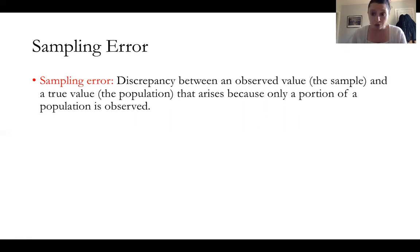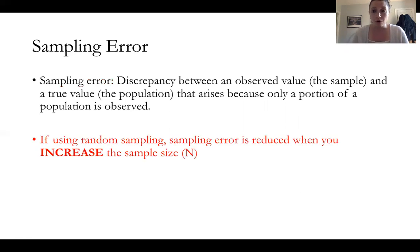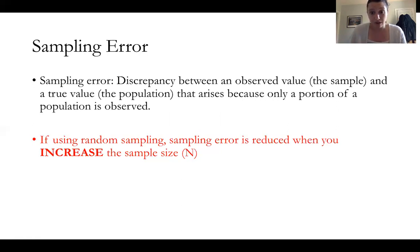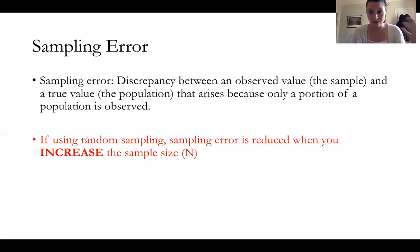So how do we reduce sampling error? If you are doing random sampling — those probability samples from video one — you can reduce sampling error by increasing your sample size, which should make sense intuitively. As your sample keeps growing, it approaches the entire population, representing more people. However, the same is not true for non-probability samples. If you do a snowball sample and increase the sample size, that probably won't increase its representativeness — you could just be increasing the bias if it started out biased.